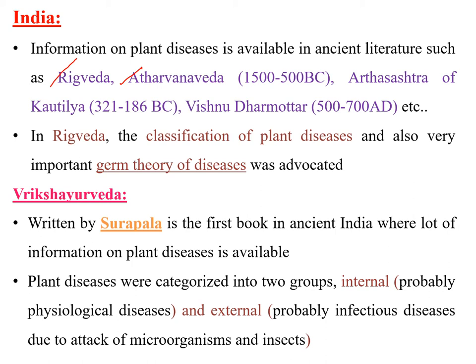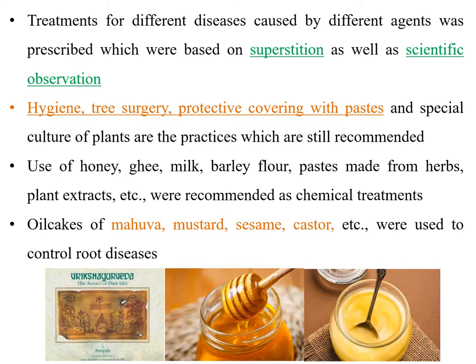In this book, plant diseases were categorized into two groups: internal and external. Internal diseases were probably physiological disorders, and external diseases involve attack of microorganisms or insects. Treatments for different diseases were also mentioned in this book, based on superstition as well as scientific observations. Superstition involved praying to deities for diseases to disappear, while scientific observations involved treating with some material. Surapala recommended hygiene, tree surgery, removal of infected parts, protective covering with paste, and special cultural treatments.